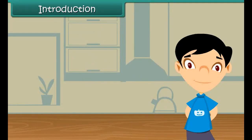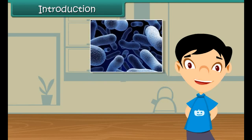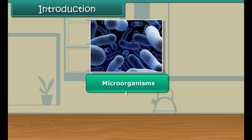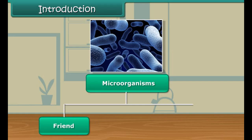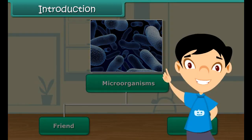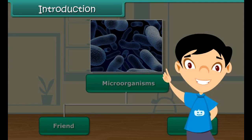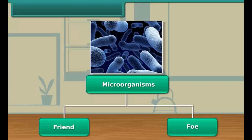Hi friends, as we all know there are so many microorganisms in our surroundings. They are classified into different groups — some of them are useful for us and hence called friends, while most of them are harmful and hence called foe or enemy. So in this module, we are going to learn more about the friends and foe nature of these microorganisms.